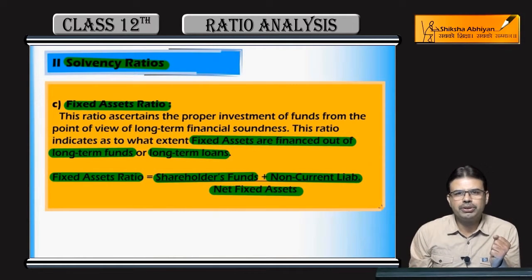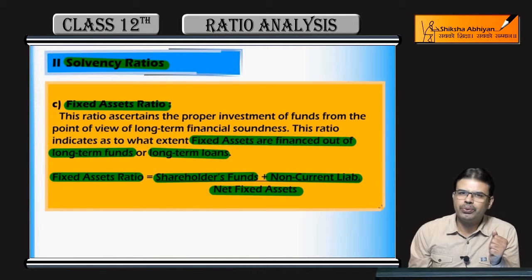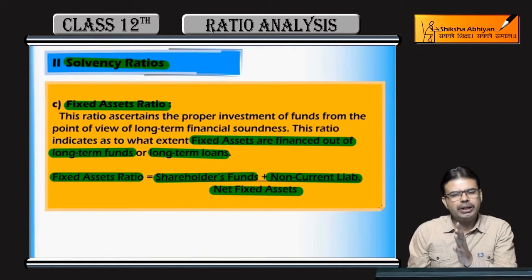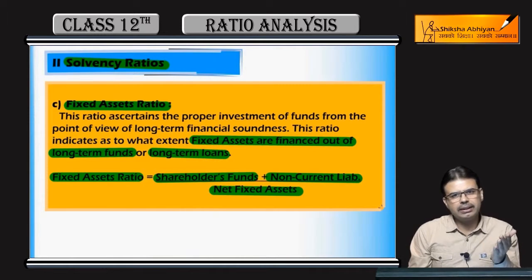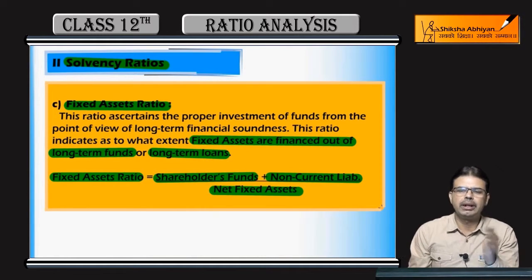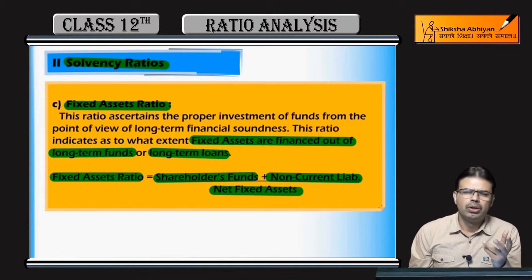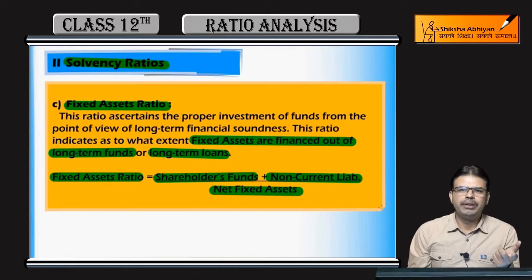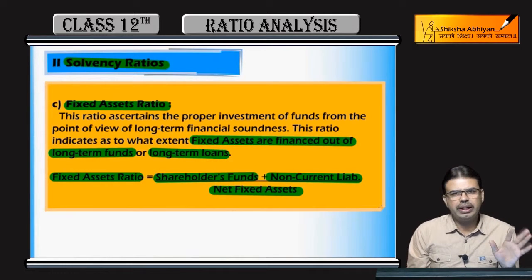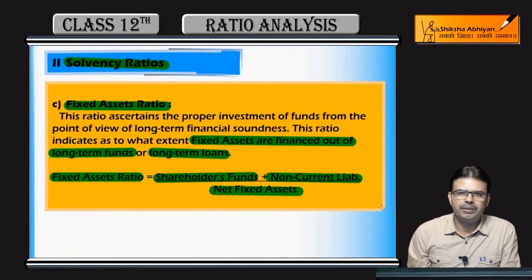Agar loan bhi liya hai to 15-18 saal baad wapis karunga — yani long-term loan. Isliye yeh dikha jata hai ki mere paas jo fixed assets aayi hain, unke liye paisa kahaan se aaya. To fixed liabilities aur fixed assets ka aapas mein relationship establish kiya jaata hai: fixed liabilities divided by fixed assets.